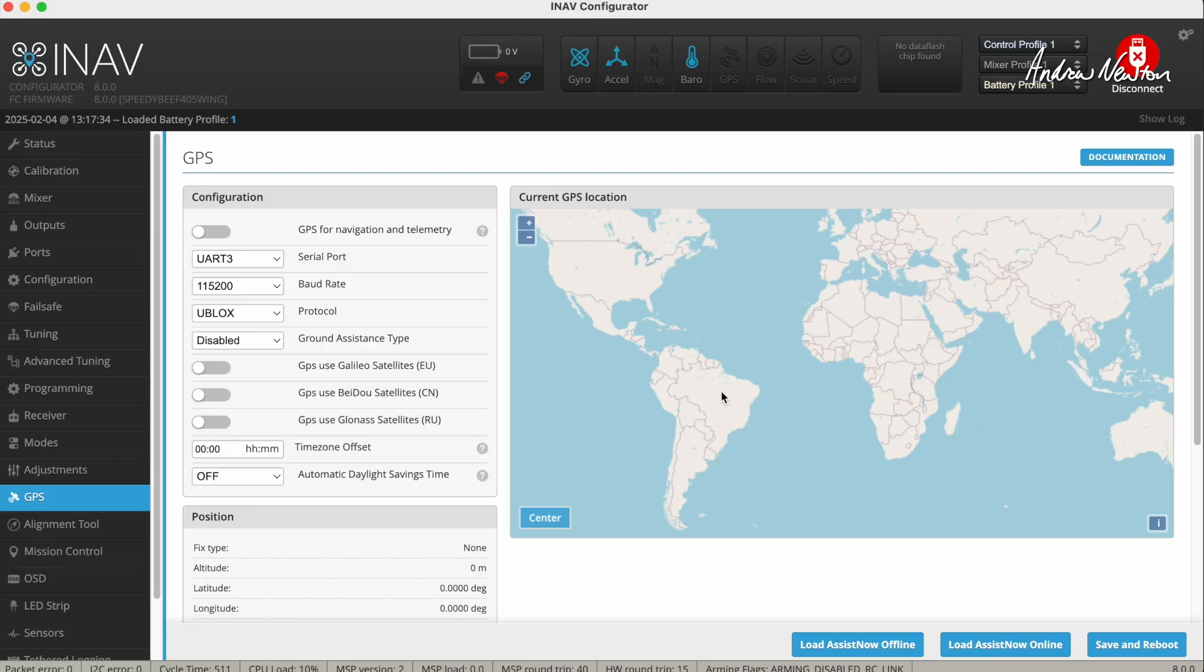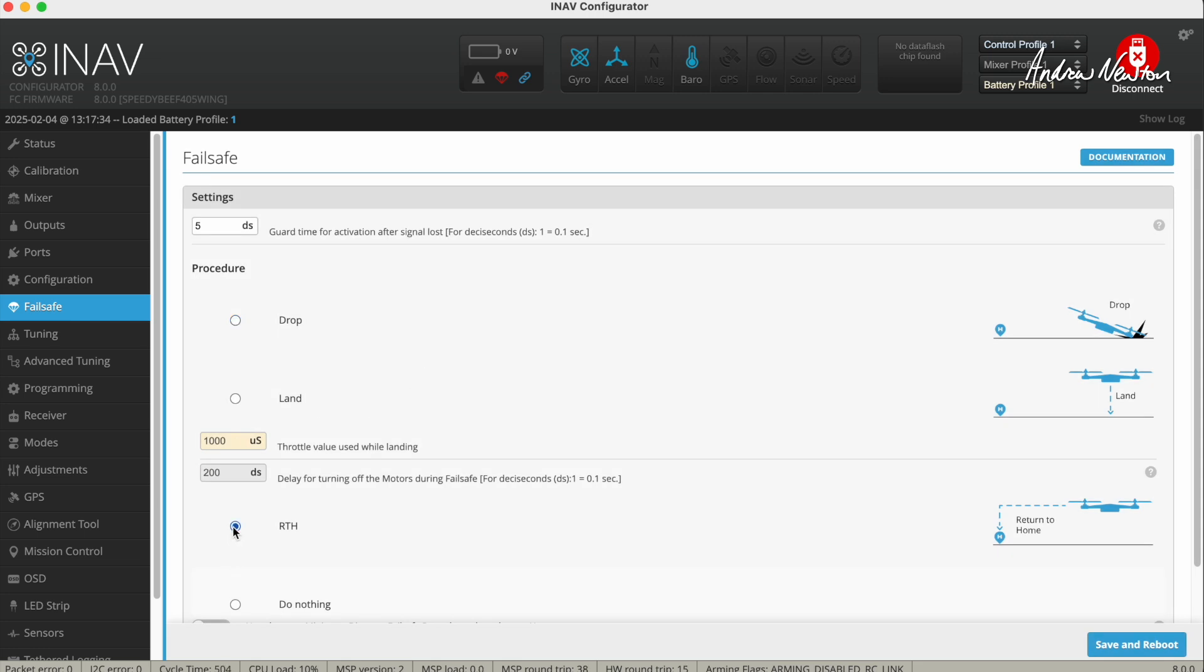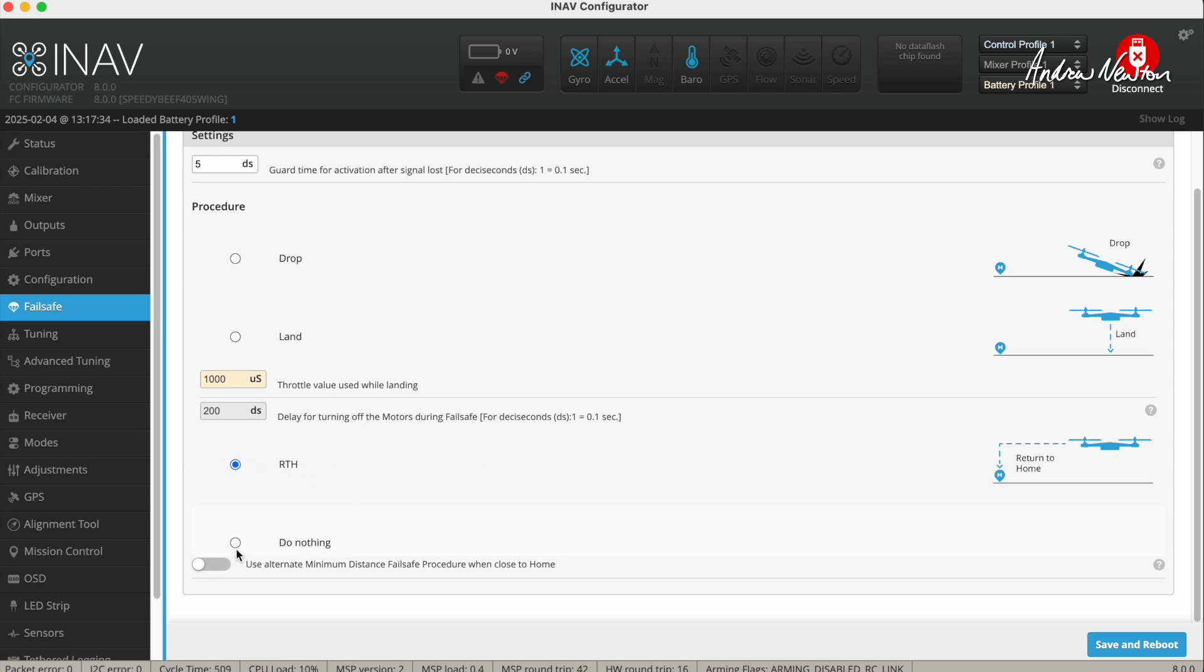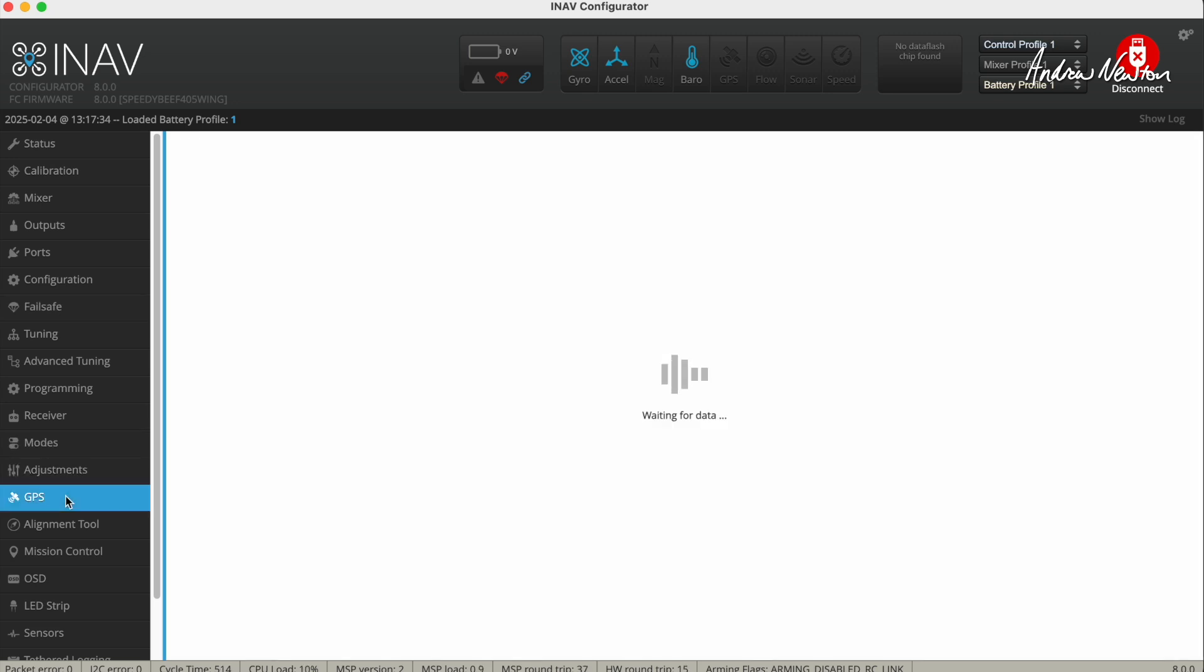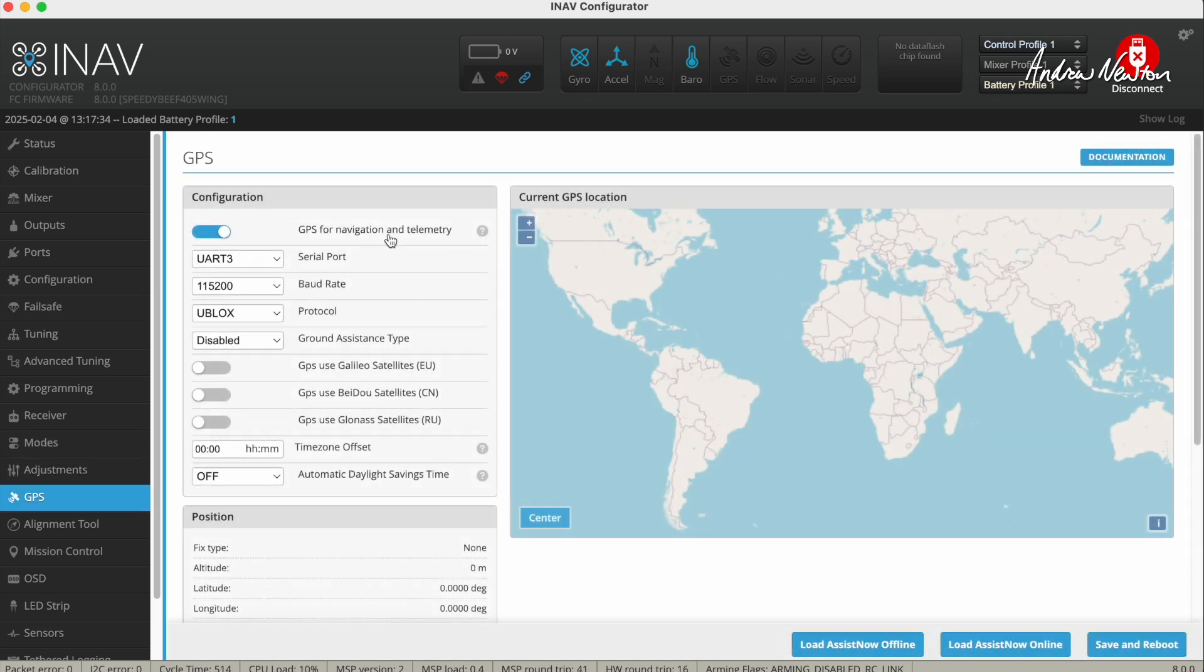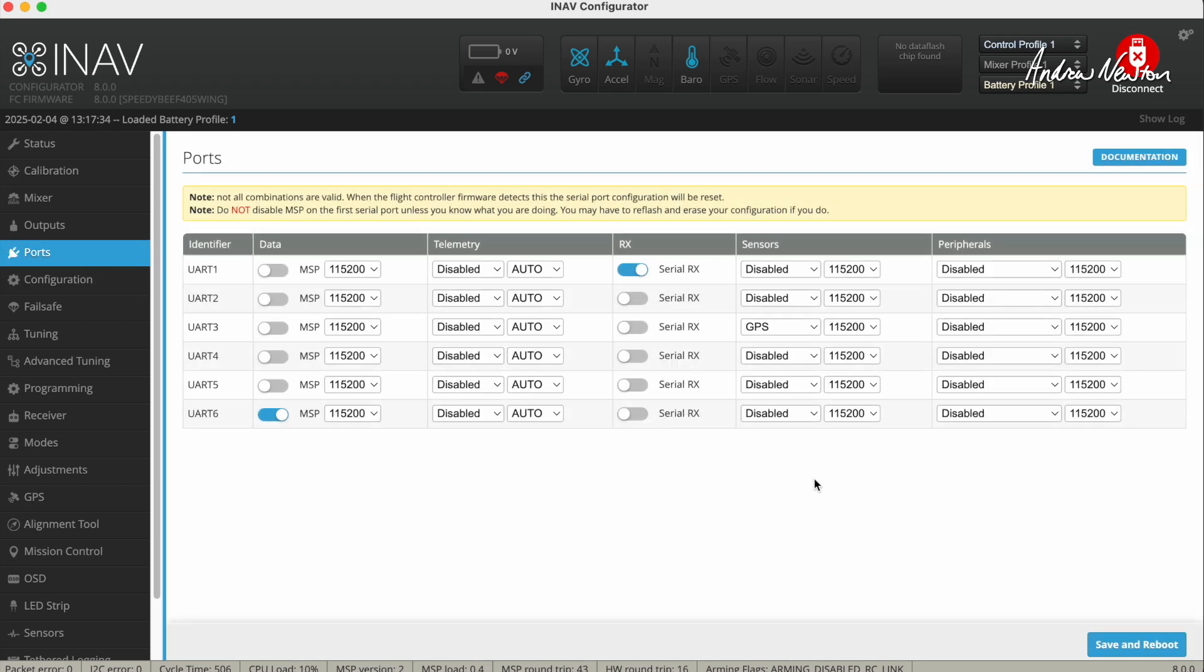Let's have a look at the configurator. Now at the moment I have the GPS disabled for troubleshooting purposes. If you do disable the GPS so that you can arm it without satellites, you also have to go to failsafe and make sure that return to home isn't selected here as the failsafe condition. That will prevent arming, so change it to do nothing if you are disabling the GPS. But we're now going to enable the GPS. Let's go to the GPS, click GPS for navigation and telemetry. Make sure the serial port that the GPS is connected to is listed here. So that's UART3. Let's go to the ports. UART3, there is the GPS selected there.